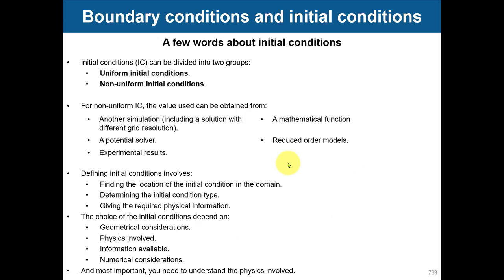For initial conditions, you have different types: uniform values and non-uniform values. We saw the influence of non-uniform values during the first week in the cylinder case — if you put a non-uniform value, you can accelerate the convergence rate because you are adding a perturbation to your solution. For non-uniform initial conditions, the value used can be obtained from another simulation, a potential solver, experimental results, a mathematical function, or reduced order models.